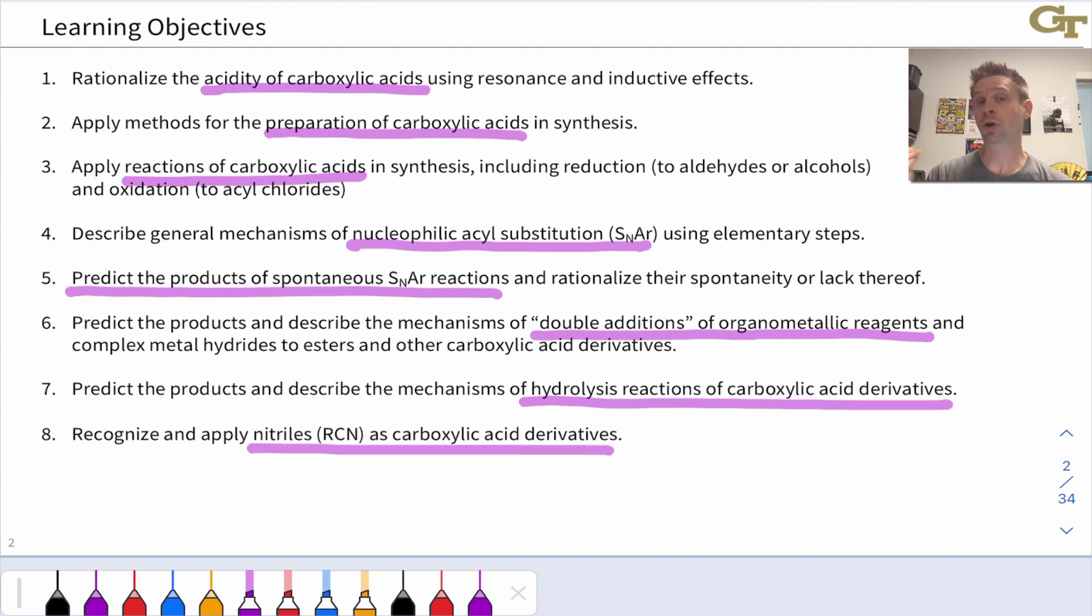Finally we'll see how the nitrile is really a carboxylic acid derivative in disguise. The cyano or nitrile carbon, the carbon involved in the C≡N triple bond, is at the same oxidation level as a carboxylic acid derivative and in many ways nitriles behave like carboxylic acid derivatives.